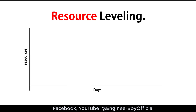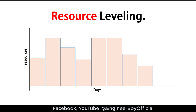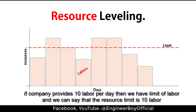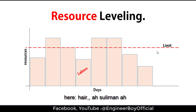I'm going to draw a graph of days versus resources, where these resources represent labor. We have a limitation from the company side — an activity needs 15 laborers but the company can provide only 10 laborers per day. So 10 laborers is the limit the company can provide. We have that limit shown here on the graph.